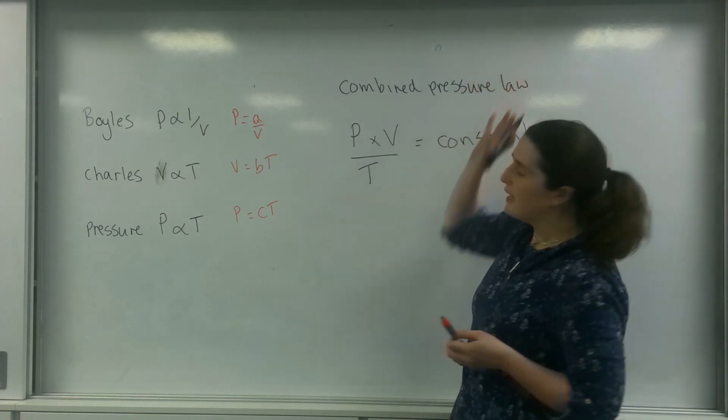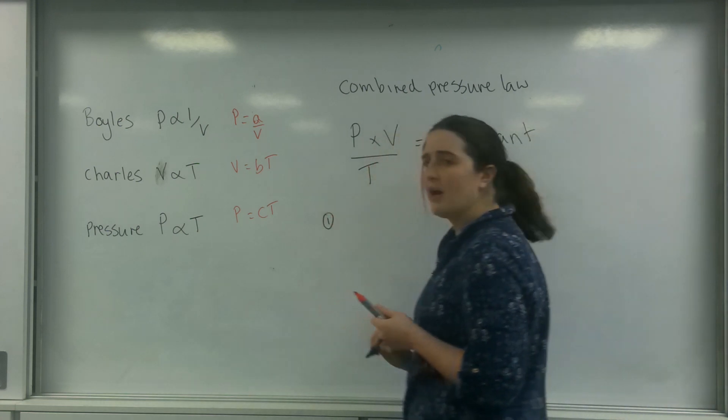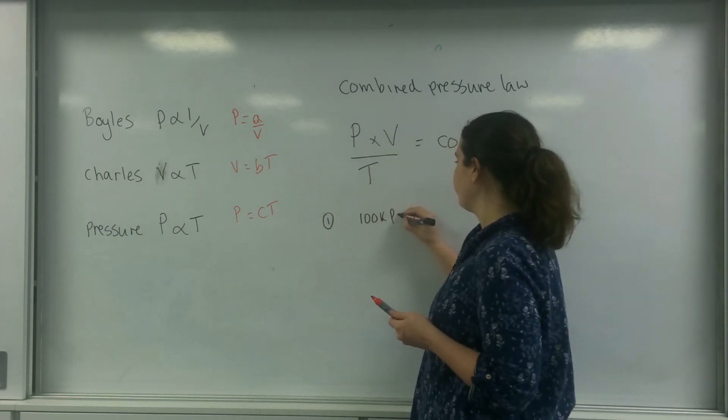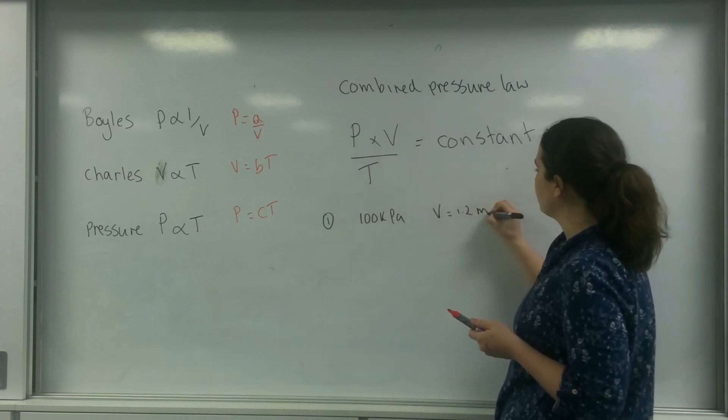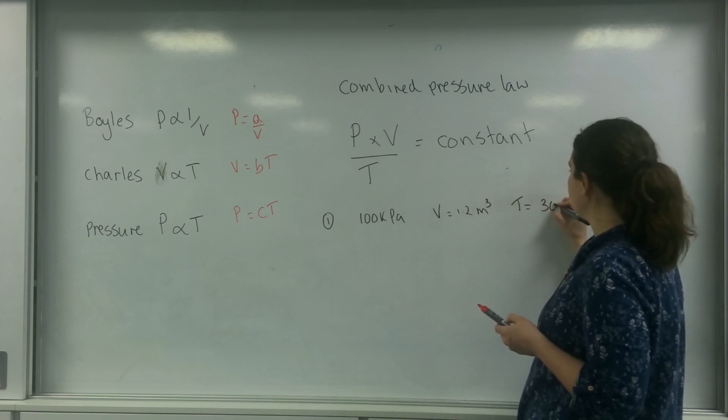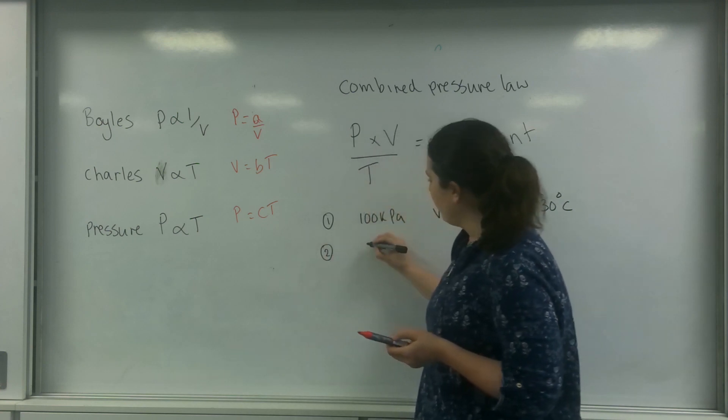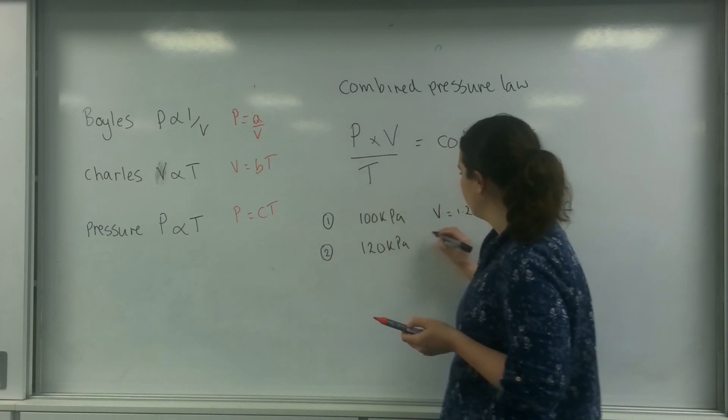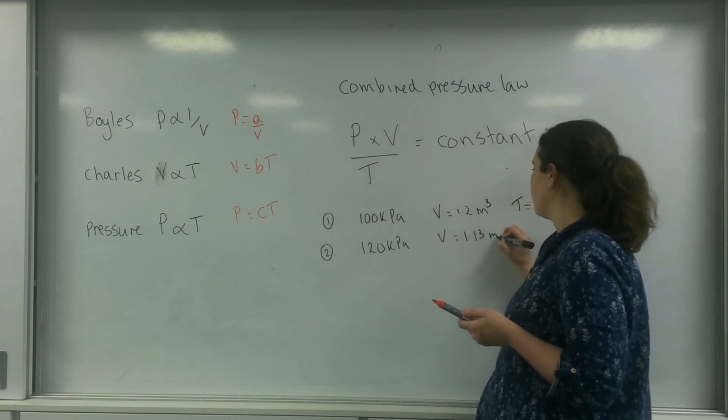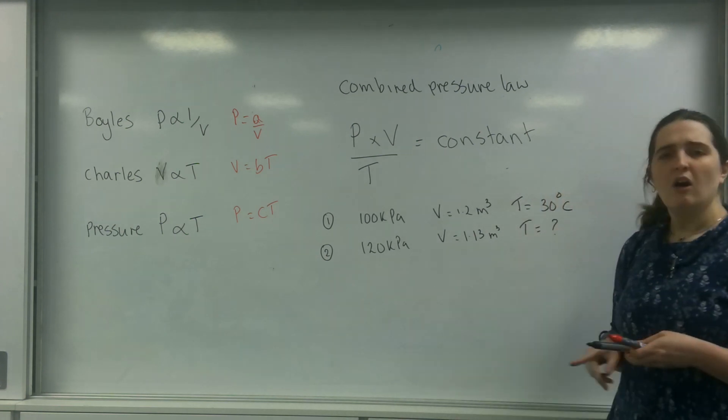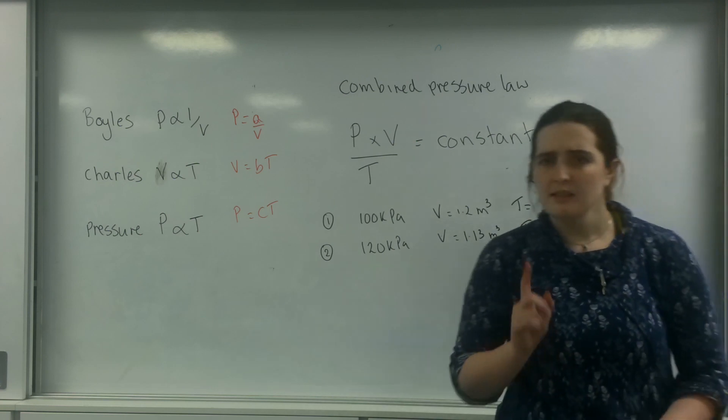The combined pressure law is all about when three things are changing at once. So if at the start I had 100 kilopascals in a volume of 1.2 metres cubed and a temperature at 30 degrees C, afterwards the pressure has risen to 120 kilopascals, the volume has shrunk to 1.13 metres cubed. What is the temperature? I can use this combined pressure law to work out this new temperature.